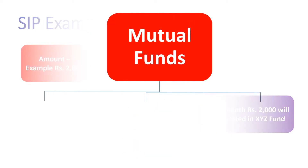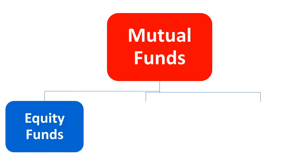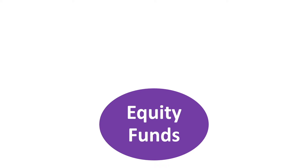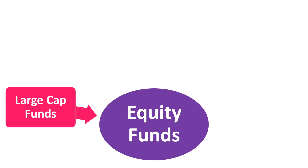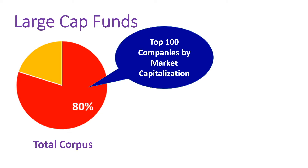Now let's look at the types of mutual funds. The first type we will consider are equity funds. Equity funds are a kind of mutual fund that invest in the stock markets. The first category is large cap — large cap mutual funds are those that invest at least 80% of the corpus in the top 100 companies by market capitalization.